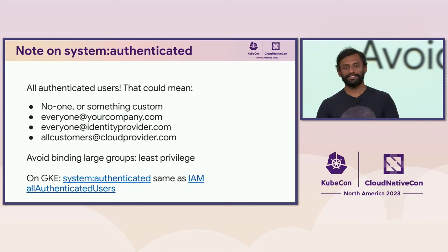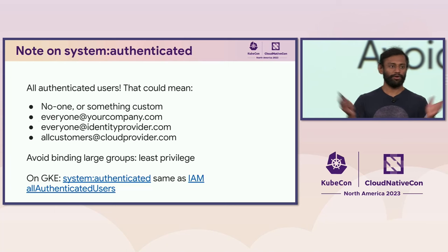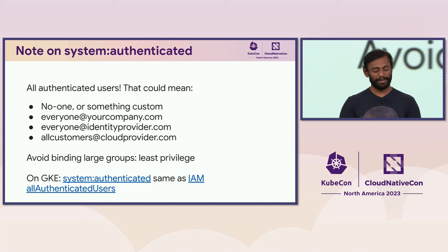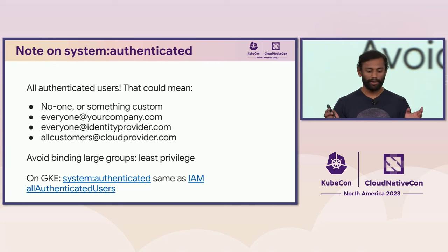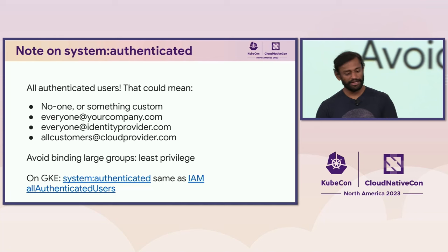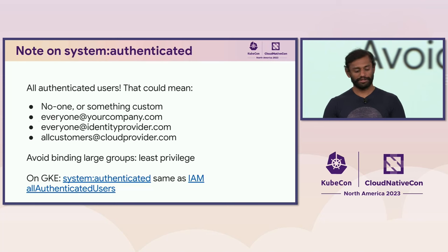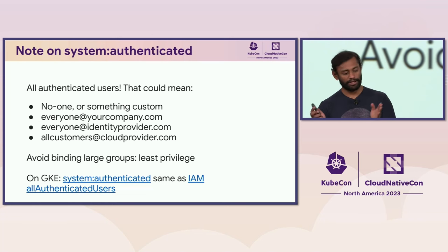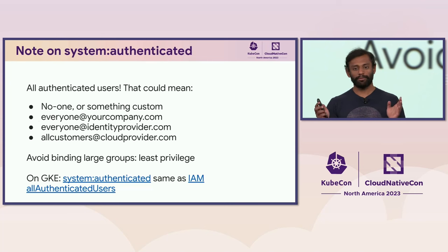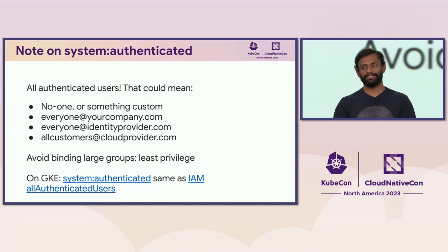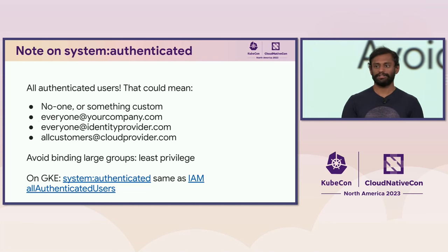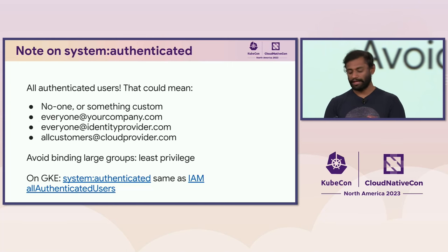A note on system:authenticated — a lot of you might think this is fine since it's authenticated. But based on your cluster setup or identity provider, this can mean very different things: it could mean no one without additional setup, everyone at your company, or everyone at that identity provider. In GKE, it aligns with IAM's all-authenticated-users, meaning anyone with a Google account. But this is authentication, not authorization — just because they can access the cluster doesn't mean they have any valid permissions in it.